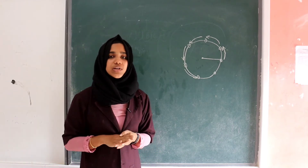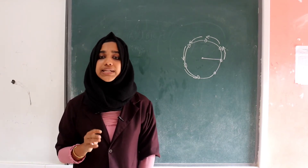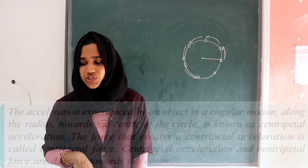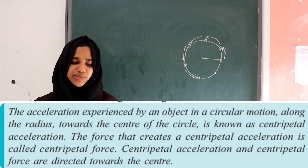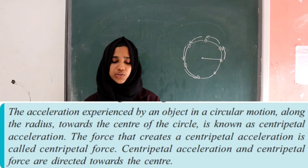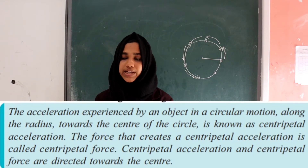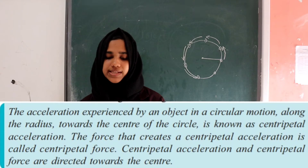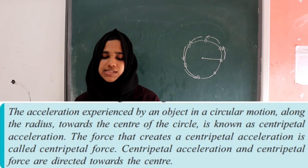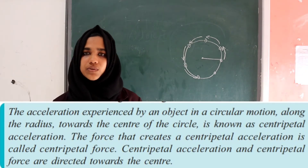That acceleration is called centripetal acceleration. The acceleration experienced by an object in circular motion along the radius towards the center of the circle is known as centripetal acceleration. The force that creates centripetal acceleration is called centripetal force. Both centripetal acceleration and centripetal force are directed towards the center.